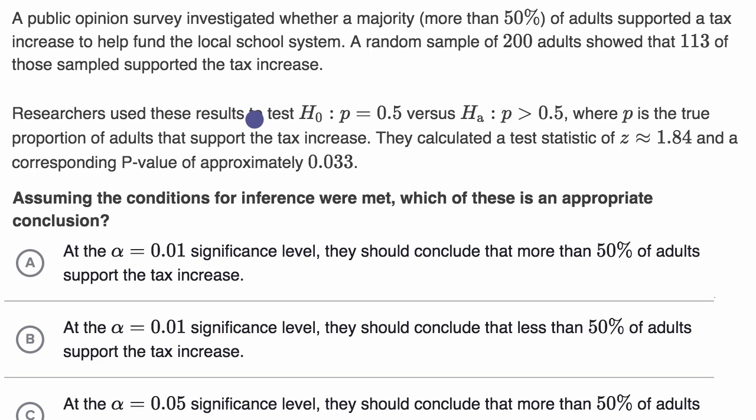Researchers used these results to test the null hypothesis that the proportion p is 0.5, versus the alternative hypothesis that p is greater than 0.5, where p is the true proportion of adults that support the tax increase. They calculated a test statistic of z approximately equal to 1.84 and a corresponding p-value of approximately 0.033.